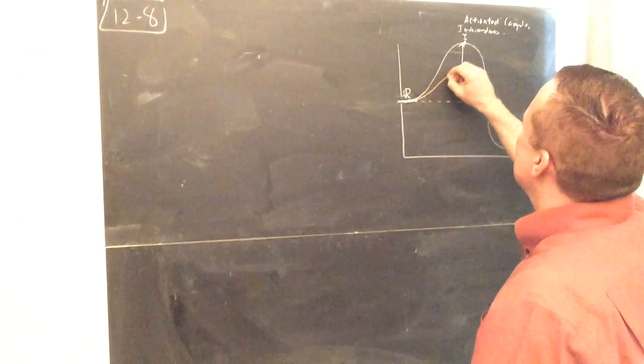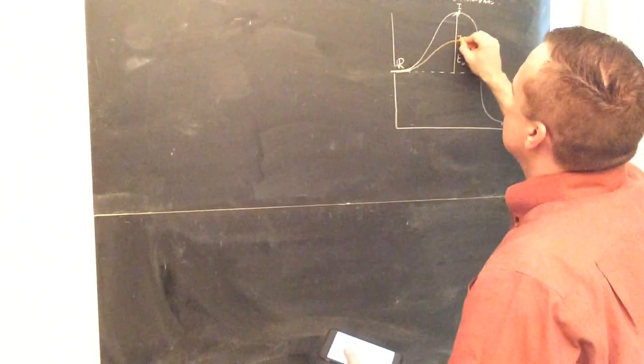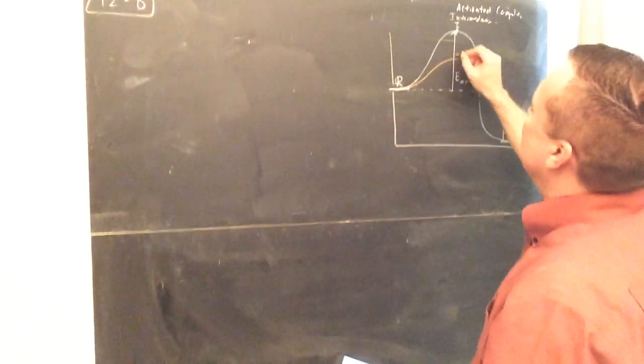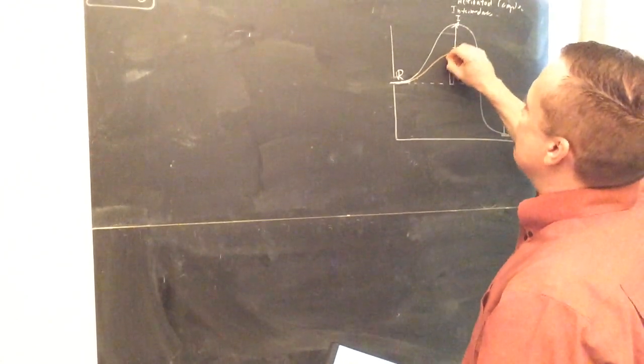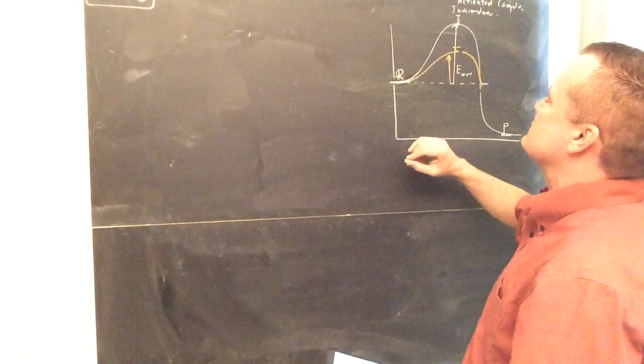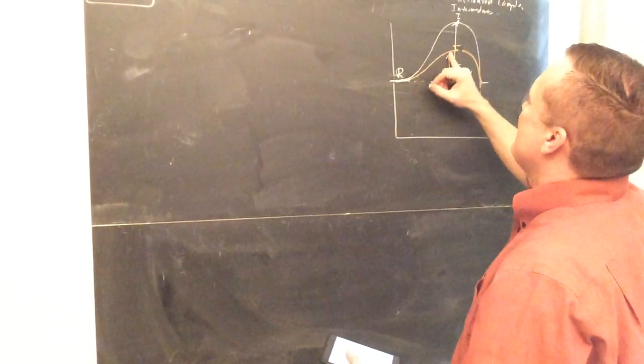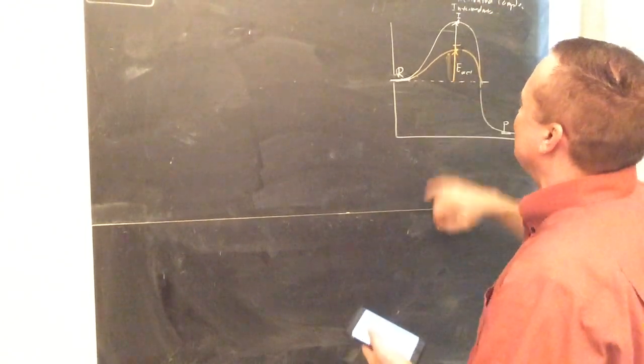When you have a catalyst, what it does is it causes less energy to be required to get to the intermediate. So now when you have the catalyst, you can form the intermediate with a lower amount of energy. That will be the activation energy for a catalyzed reaction, compared to the uncatalyzed reaction.